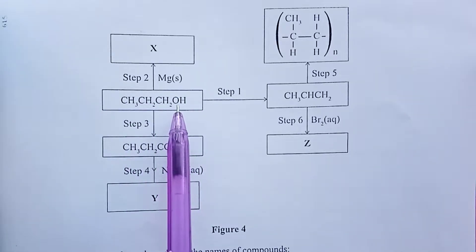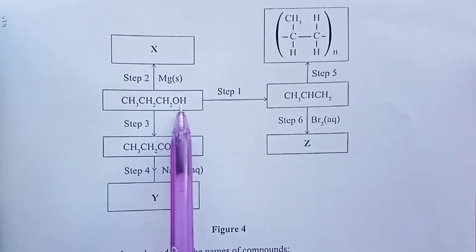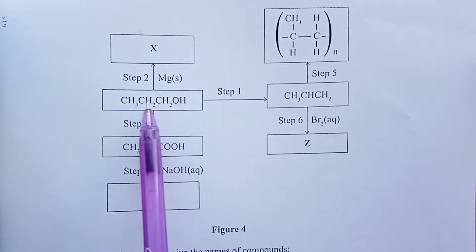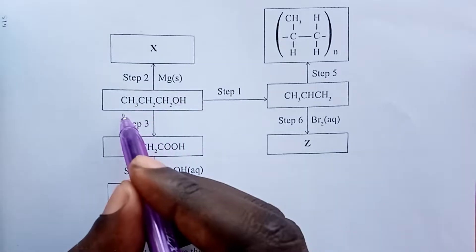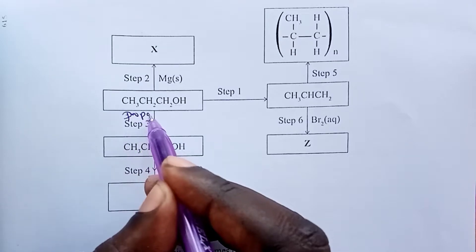This is an alkanol because of the OH group here, and it has three carbons, so the name is propan-1-ol.